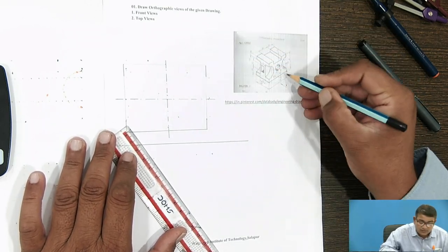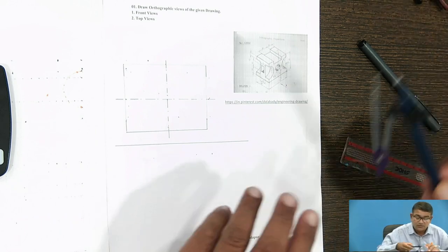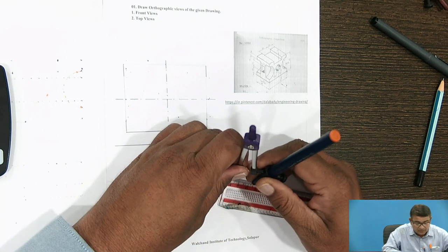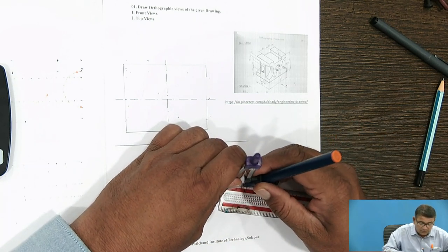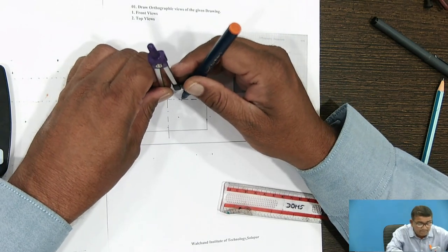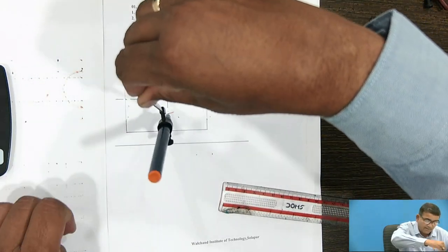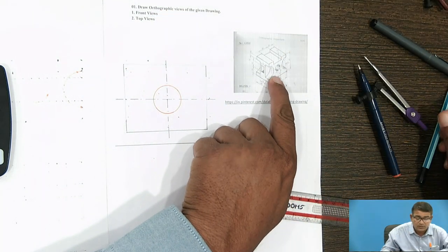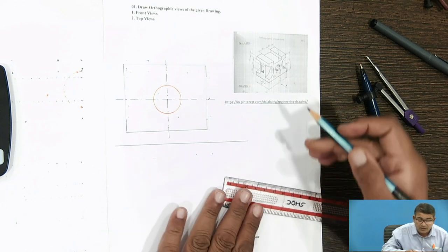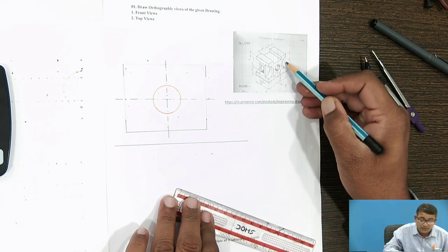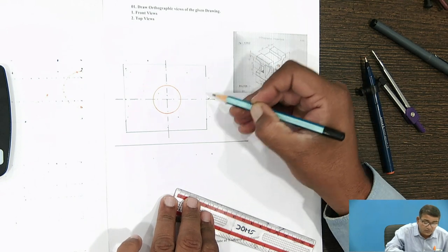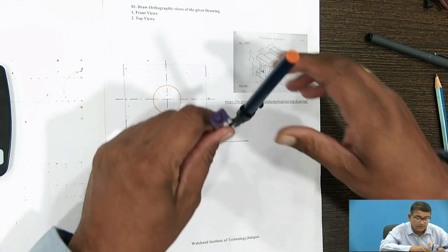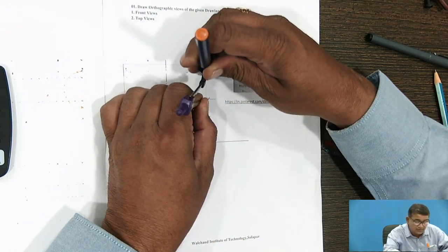With this centre line you can draw any dimensions, any edge, any circular part. Centrally, one hole is to be there — the dimension is Ø25, so the radius is 12.5mm. Draw it centrally. For the semicircular part, the diameter is 50mm, so the radius is 25mm. Take that dimension and draw it from the centre line.